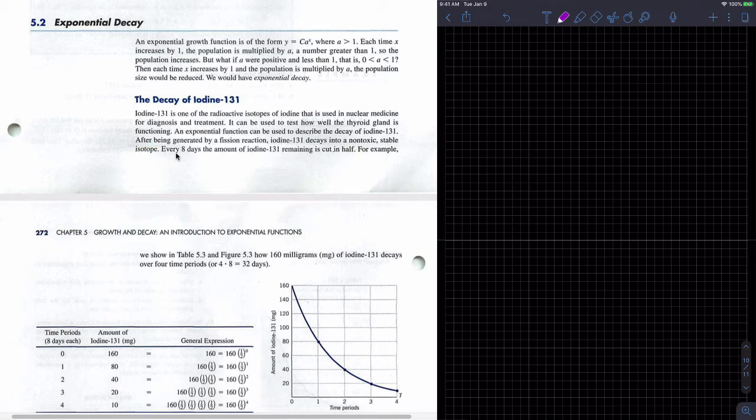And here they state every eight days the amount of iodine-131 remaining is cut in half. So recall from exponential growth, we had doubling time, and we often modeled that with a base of two, and the example we had was like the folding of the paper, right?